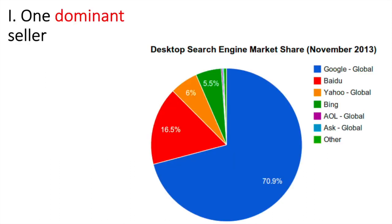Let's look at five characteristics of a monopoly. First, as we've already established, there is one dominant seller. In this data from November 2013, Google controls 70.9% of the desktop search engine market share. This would allow Google to exert significant control over the search engine market.